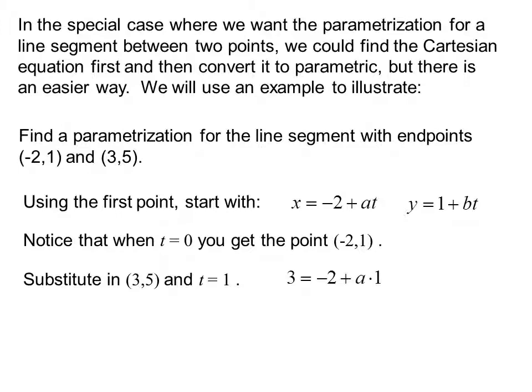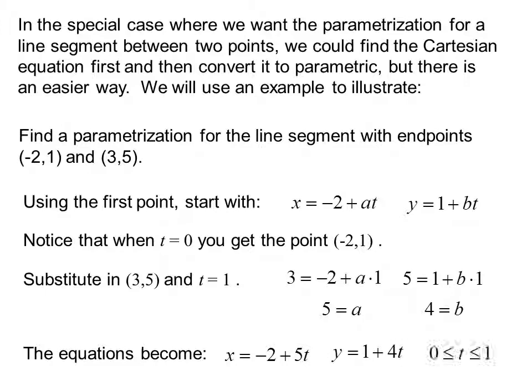We have 3 equals -2 plus a times 1, or 5 equals a. And 5 equals 1 plus b times 1, or 4 equals b. Equations become x equals -2 plus 5t, y equals 1 plus 4t, and t goes from 0 to 1.